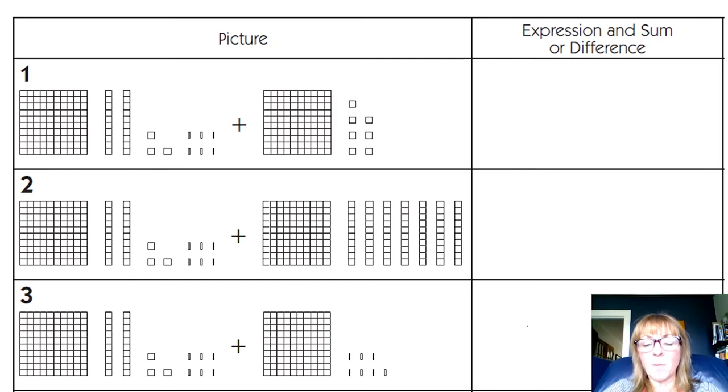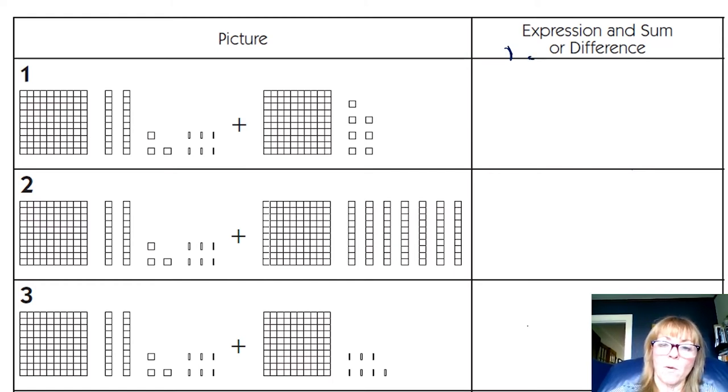This week we're using what we know about place value and addition strategies to add numbers that include decimals. One way to do this is by looking at pictures. In the picture in number problem one, we can see there is one whole hundred, which we would write as one whole. And then we go on to tenths, hundredths, and thousandths. I put my decimal right after my whole number. And then I have two tenths, three hundredths, and six thousandths. We read this number as one and two hundred thirty-six thousandths.